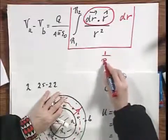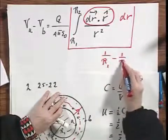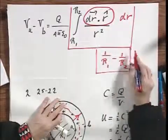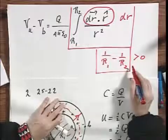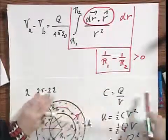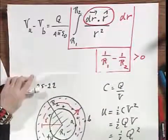It is one over R1 minus one over R2. And this is larger than zero for the simple reason that R1 is smaller than R2. So, VA is larger than VB.